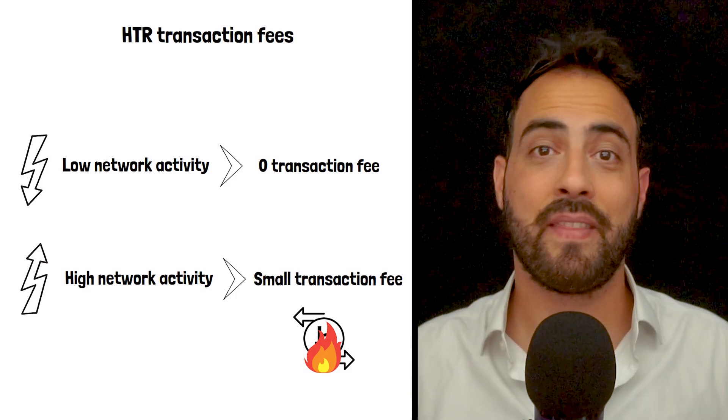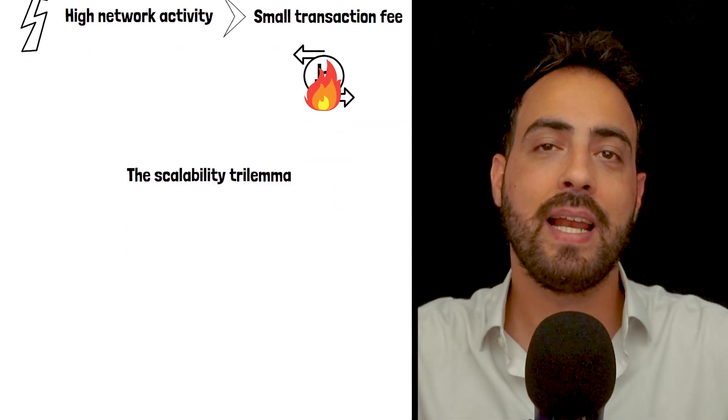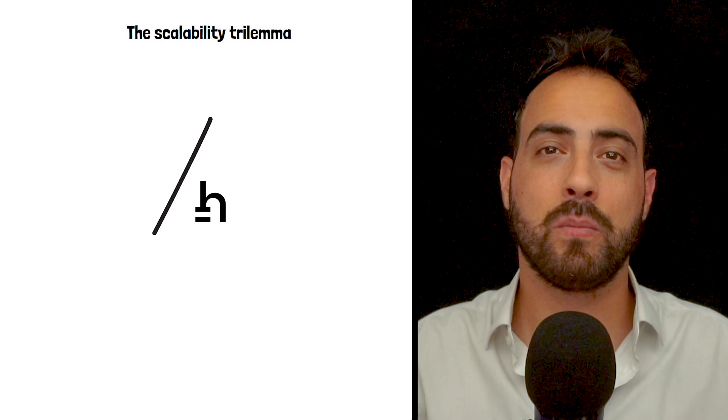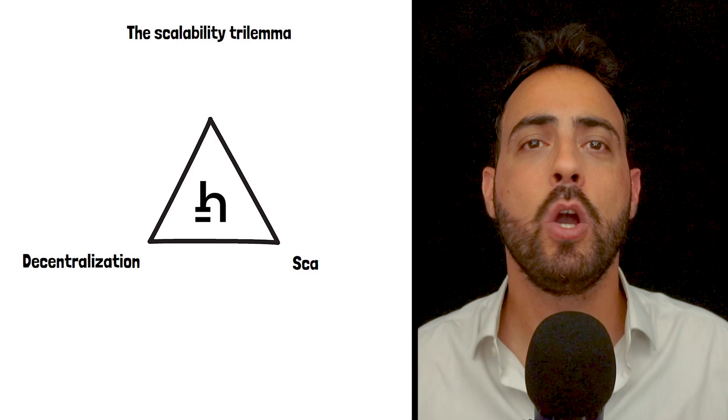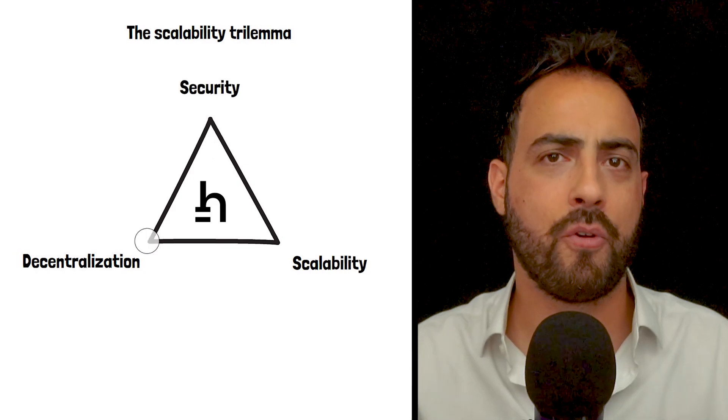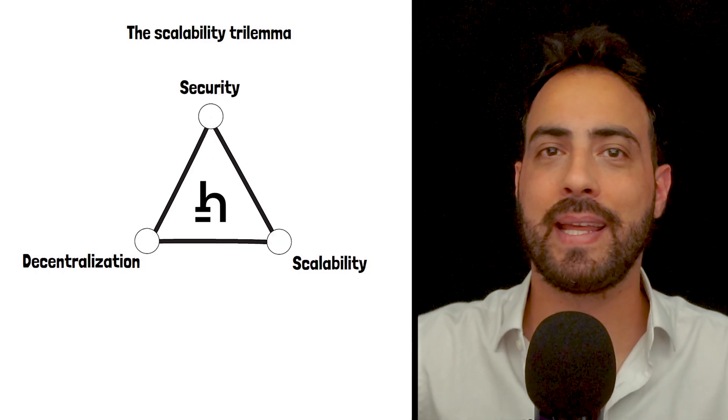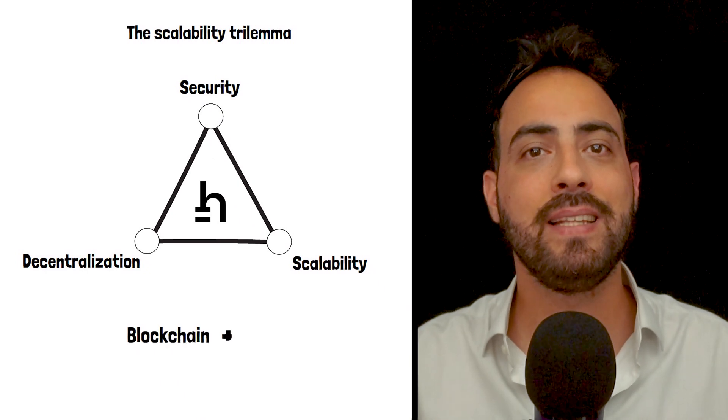Hathor is an innovative project that aims to solve the scalability trilemma. The trilemma claims that blockchain systems can only at most have two of the following three properties: decentralization, scalability, or security. Hathor aims to solve this by combining elements of both blockchain and DAG technologies.